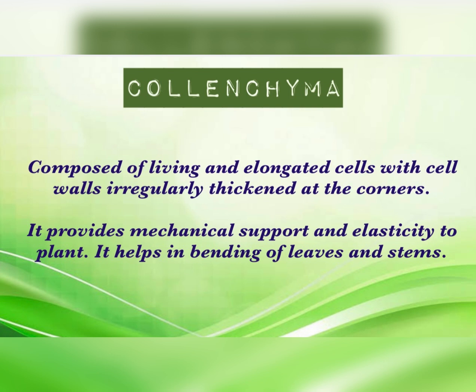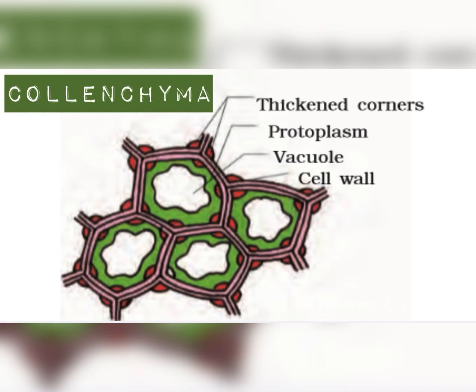Colenchyma is composed of living cells. The cell wall is thick but only at the corners. It provides mechanical support and elasticity to the plant. Leaves and stems are able to bend because of colenchyma. In the diagram, we can clearly observe that the corners are comparatively thicker — the thickness is not even.